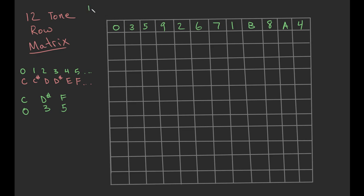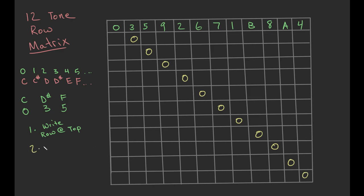Step one is to write the row across the top. Step two is super easy: simply write your first note down the diagonal. In my case it's zero — I like to start my rows with zero, but you can start with whatever you want. Just write it down the diagonal. There's no real tonic in serial music, but you can think of it as writing the tonic down that diagonal.